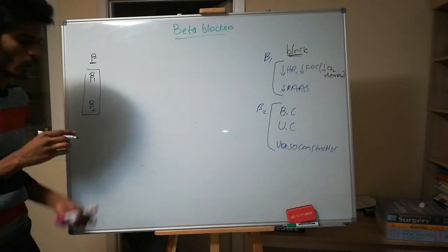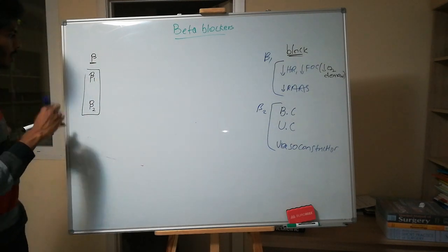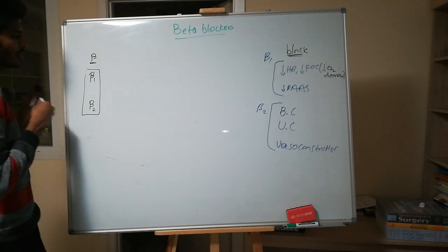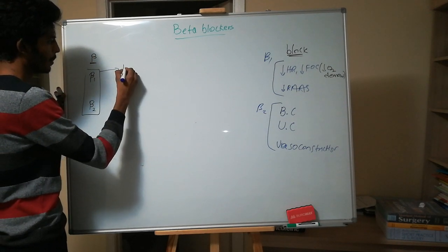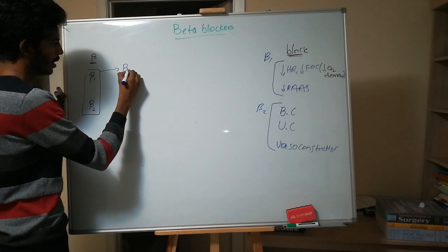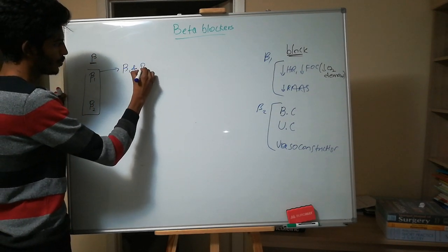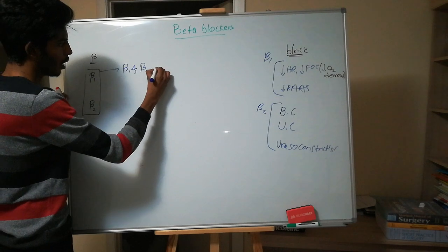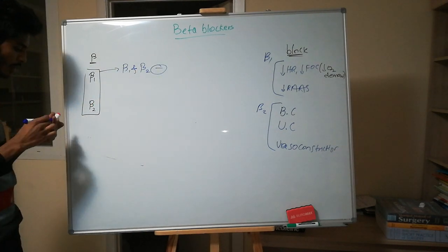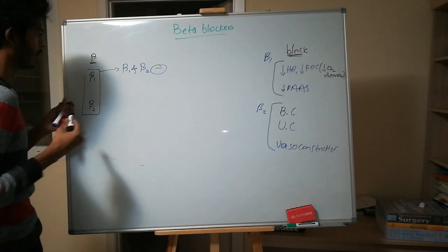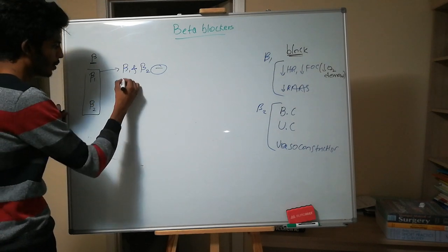The drugs which block both beta 1 and beta 2 — that is propranolol. One thing to note: every beta blocker ends with '-lol.' At the end of the video I'll give a simple idea of how to remember these '-lols.'